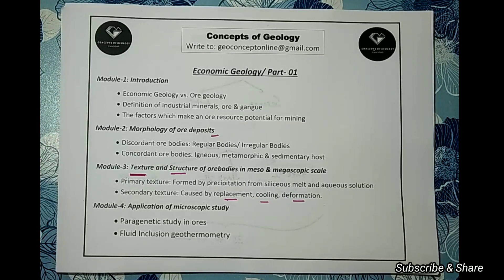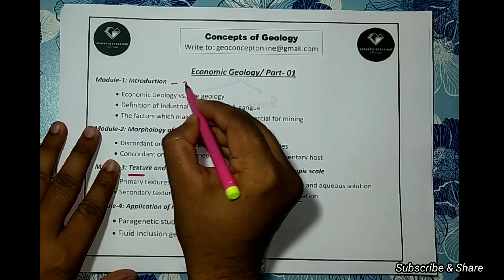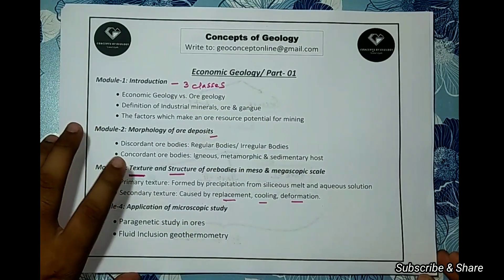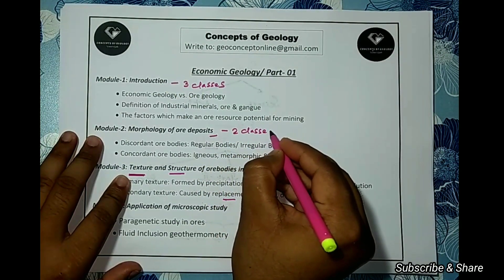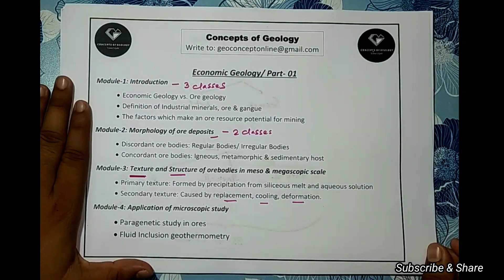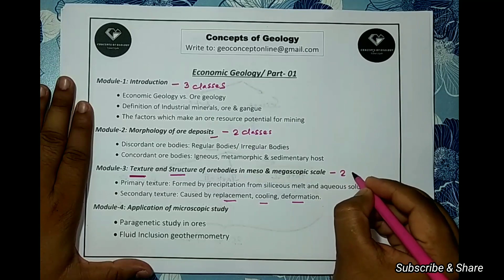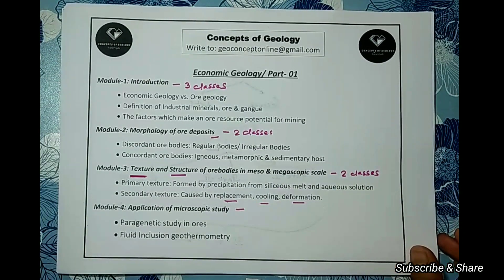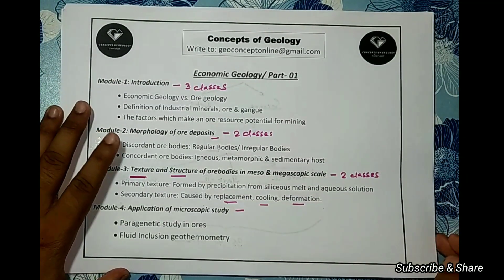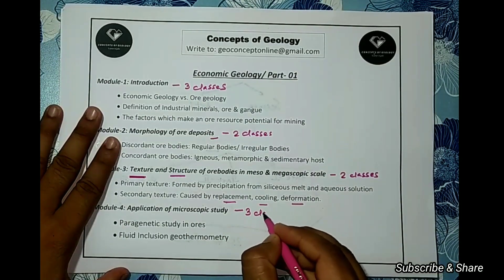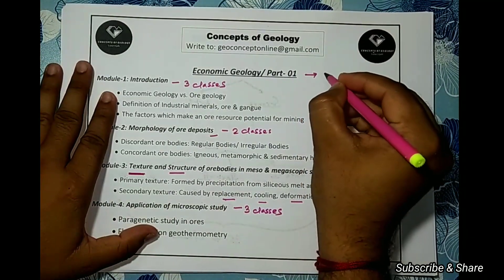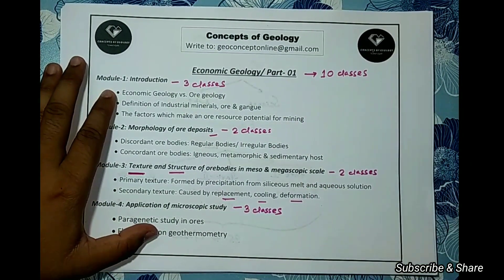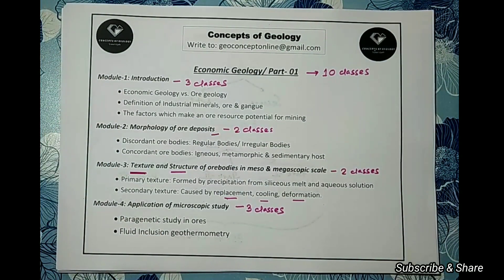So those are the four modules of Part 1. Module 1, the introduction, will need approximately 3 classes. Module 2, morphology of ore deposits, will need 2 classes. Module 3, texture and structure, will need a minimum of 2 classes. Module 4, application of microscopic study, will need a minimum of 3 classes. In total, 3 plus 2 plus 2 plus 3 equals 10 classes to complete Part 1.